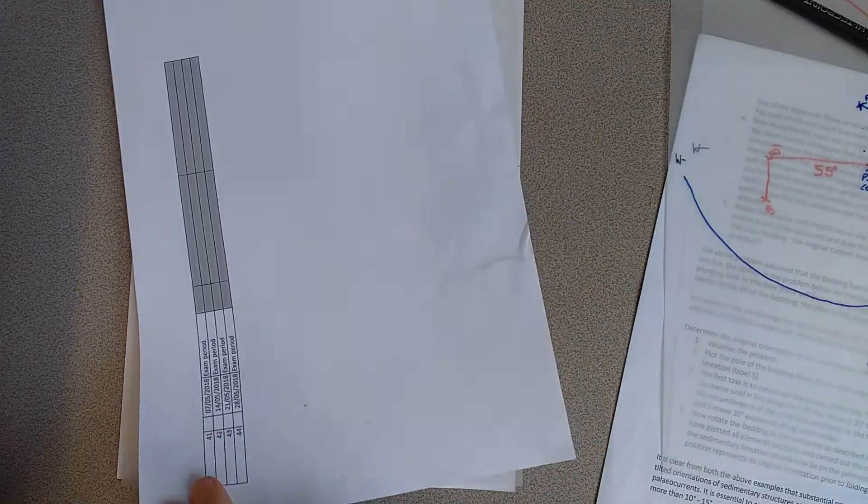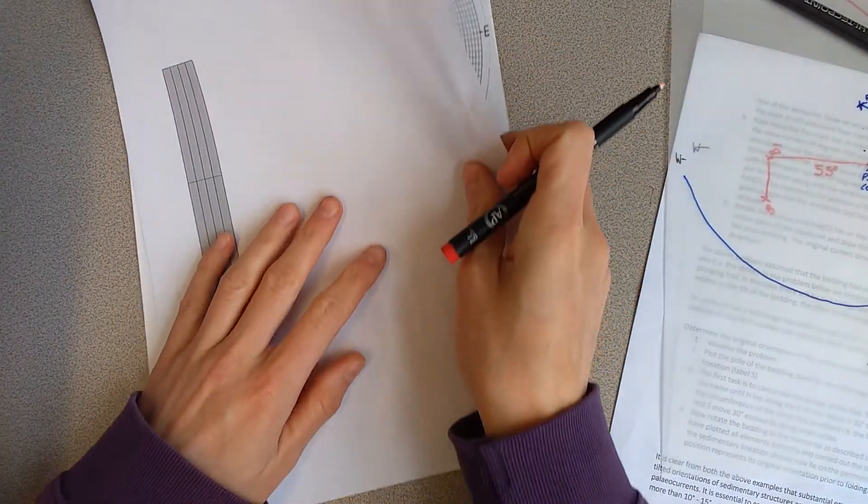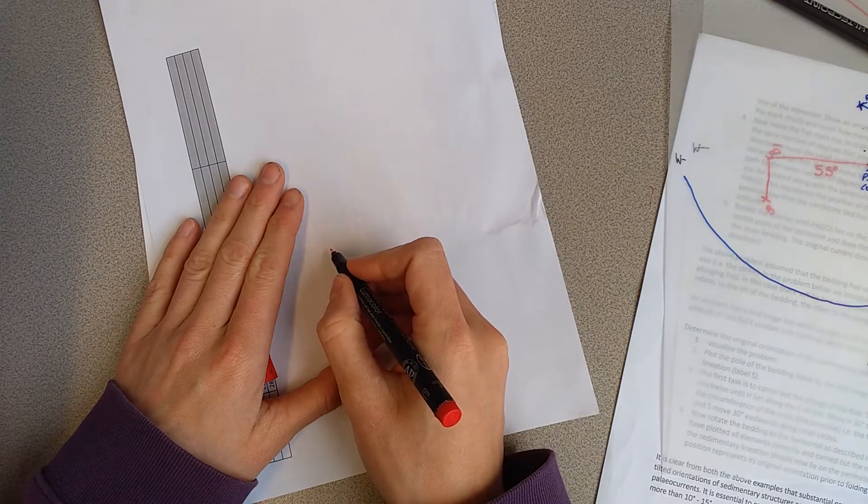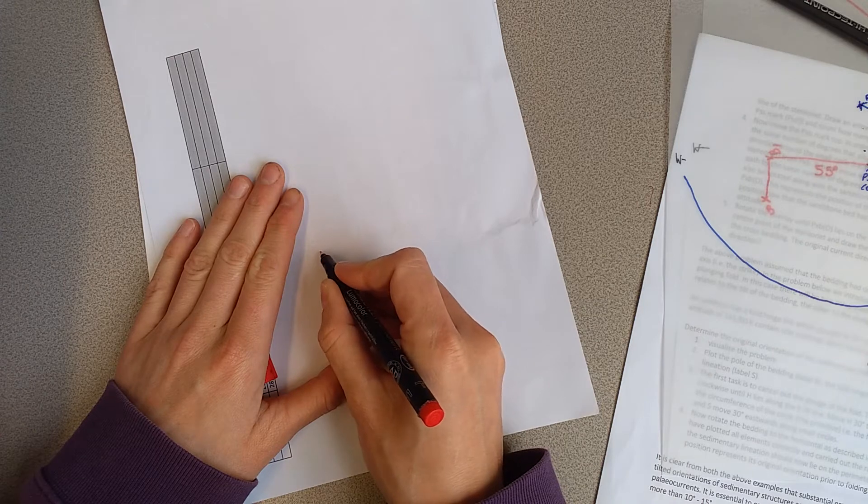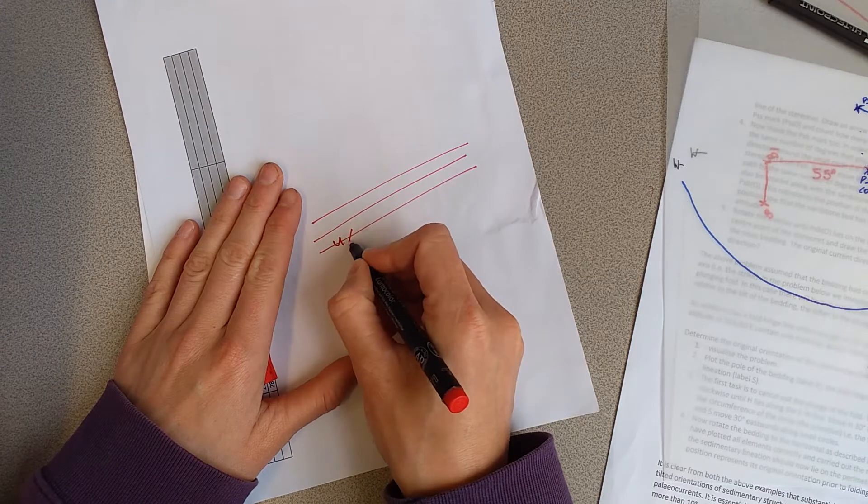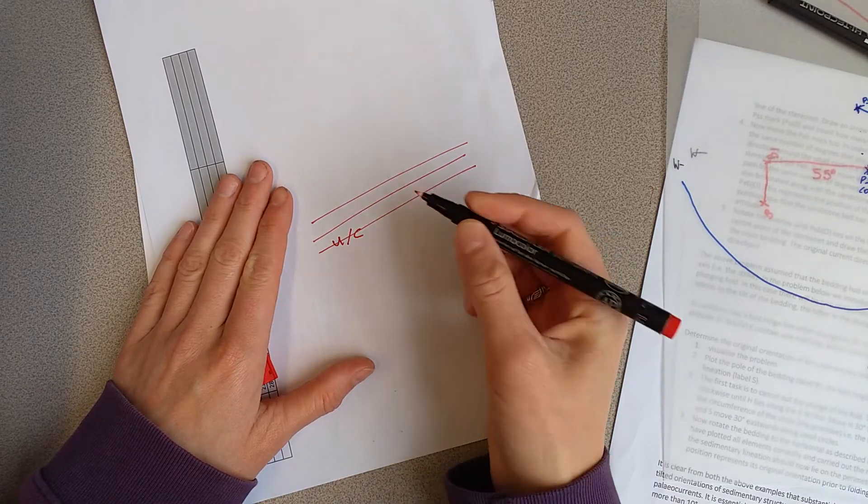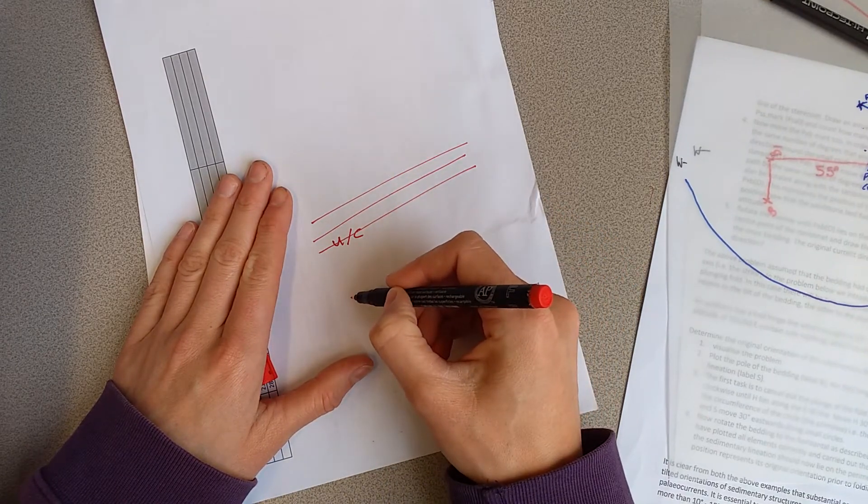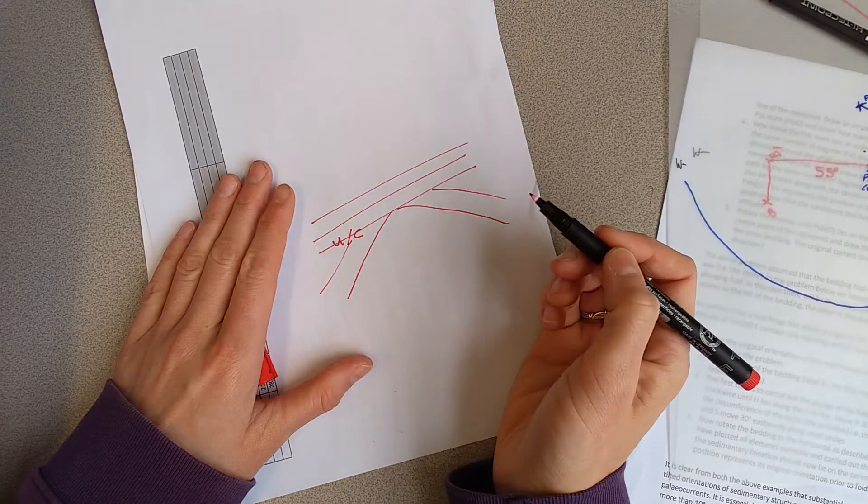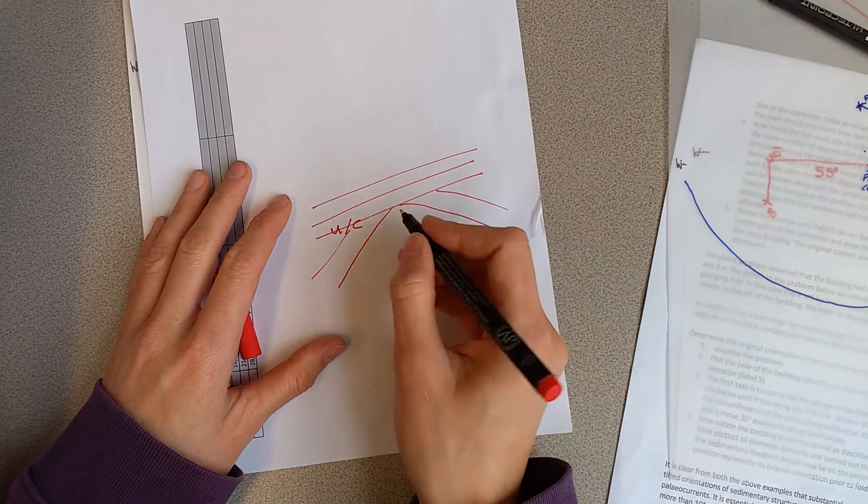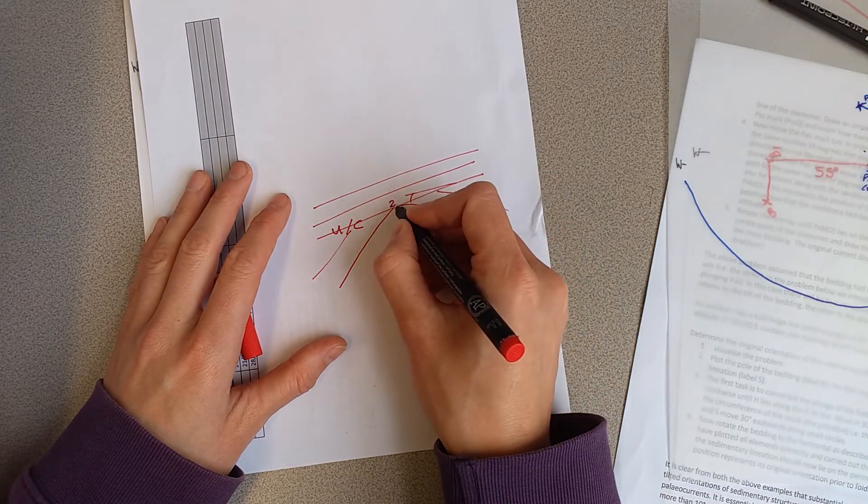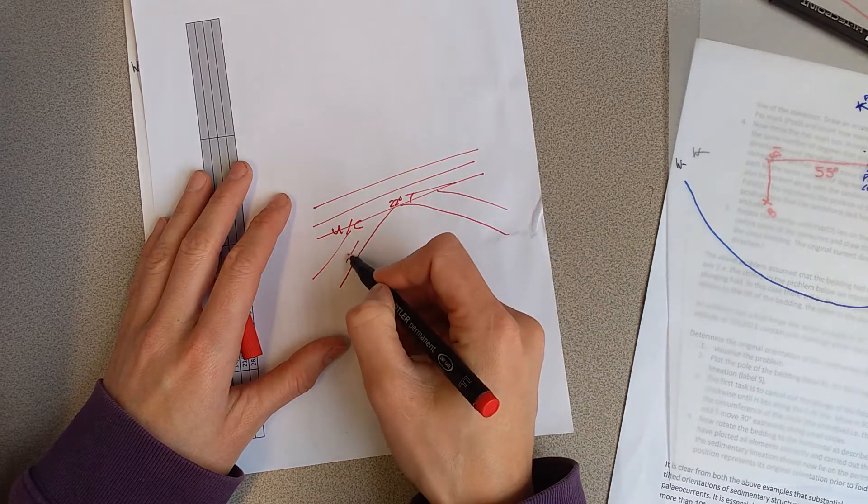If I just draw you a little sketch of this: we've got an unconformity which is dipping at 22 degrees. This could be our sediments, here is our unconformity, and then underneath we've got some folded rocks. These are dipping 22 degrees with folded rocks underneath.